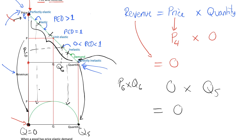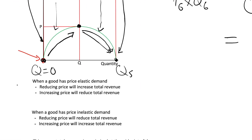It turns out that if we do this exercise for every point on the demand curve, our revenue curve looks like a semicircle shape. Revenue is increasing when we are in the elastic part of the demand curve, reaches its maximum at the unit elastic midpoint, and then decreases as we move into the inelastic region — either producing higher quantities at lower prices or setting lower prices than the revenue-maximising point.